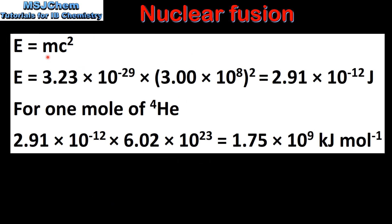Next we can use the equation E equals MC squared to calculate the energy released in the fusion reaction. In this equation M is the mass defect in kilograms and C is the speed of light. So the mass defect was 3.23 times 10 to the negative 29 kilograms, and we multiply this by the speed of light squared, which gives us 2.91 times 10 to the negative 12 joules.